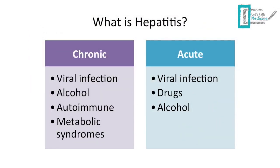Here we have the causes of chronic and acute hepatitis. For chronic hepatitis, we have viral infection, alcohol, autoimmune, and metabolic syndrome — mainly hemochromatosis and Wilson disease. For acute hepatitis, we have viral infection, drugs like isoniazid and methyldopa, and also alcohol.